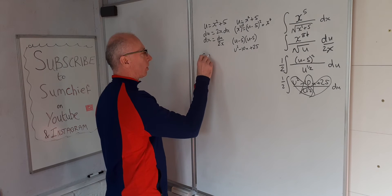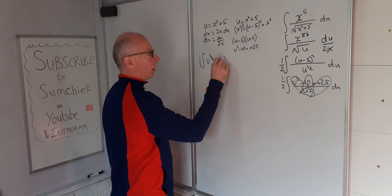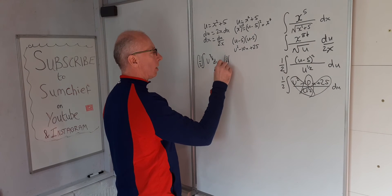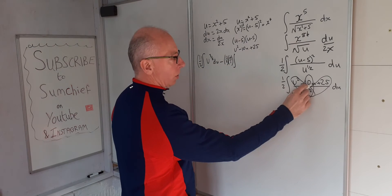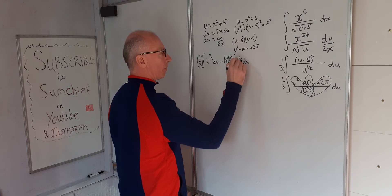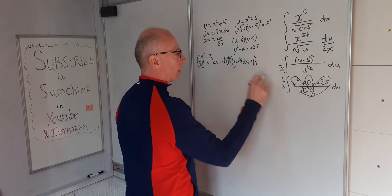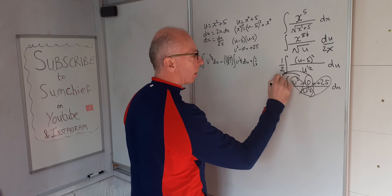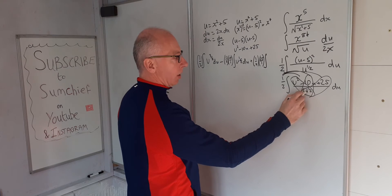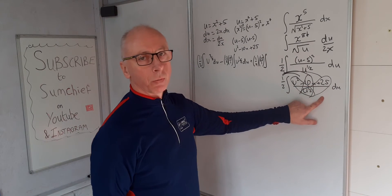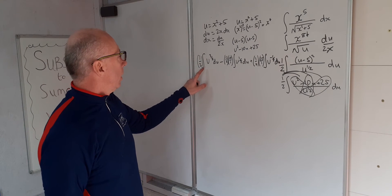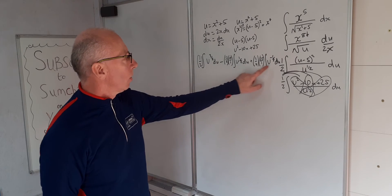So the first term is one half times the integral of u to the three over two du. For the second term, don't forget the half out front — we also pull out the 10, giving us minus 10 over 2 times the integral of u over square root of u, which is u to the half du. For the third term, we have plus one half times 25 times the integral of 1 over u to the half, which is u to the minus one half du.